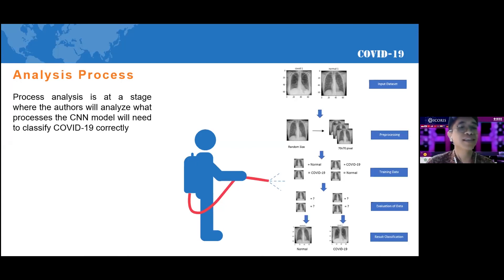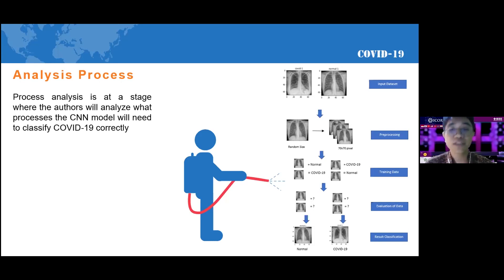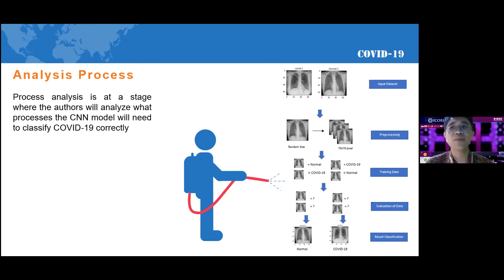The analysis process is the stage where we analyze what process the CNN model needs to classify COVID-19 correctly. We have two steps in our analysis process: input dataset, pre-processing, training, data evaluation, and result. We collect an image dataset to train CNN models to recognize images according to the categories or labels provided. CNN processing consists of a pre-processing step where data is reprocessed according to model needs, such as resizing the image. During the experimental process, we create experiments by changing the output parameters and dataset ratio within the CNN architecture across different scenarios.